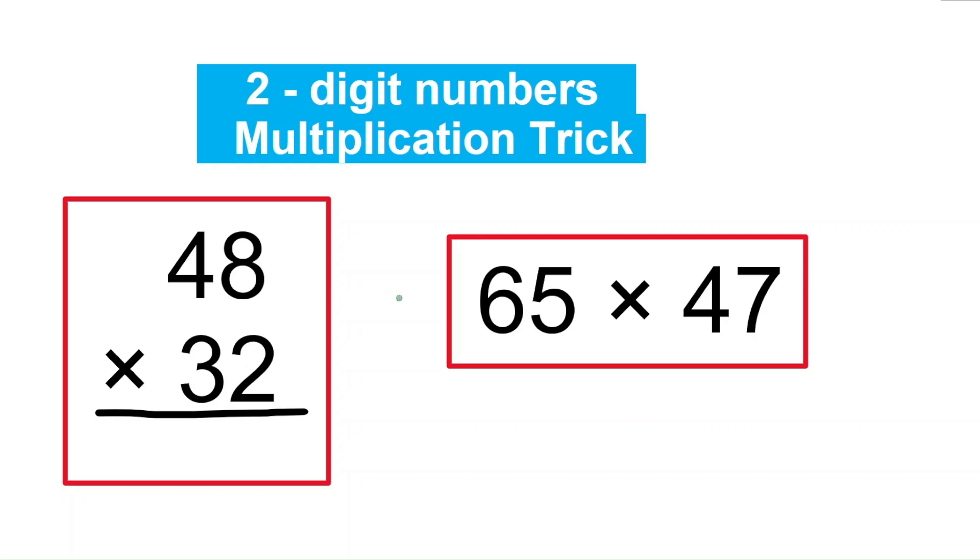Two-digit number multiplication trick. We can write the two digits like this: 48 times 32, as two rows, or we can write it as a single row. Let's see how to solve this.